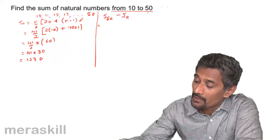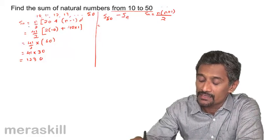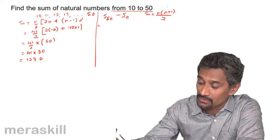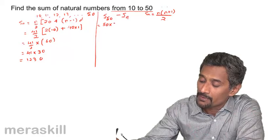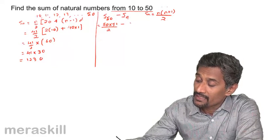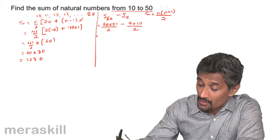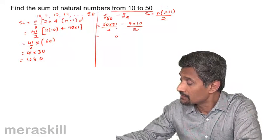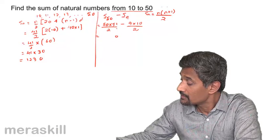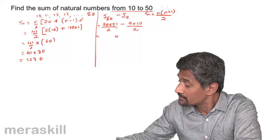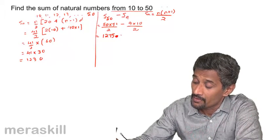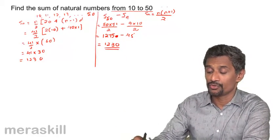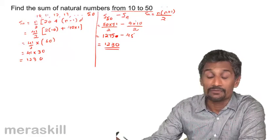Using the formula: SN = 41/2 × (2×10 + 40×1) = 41/2 × 60 = 41×30 = 1230. The other way is S50 − S9: using SN = n(n+1)/2, this gives 50×51/2 − 9×10/2 = 1275 − 45 = 1230. Both methods — the general AP formula or S50 − S9 — give the same answer: the sum of numbers from 10 to 50 is 1230.